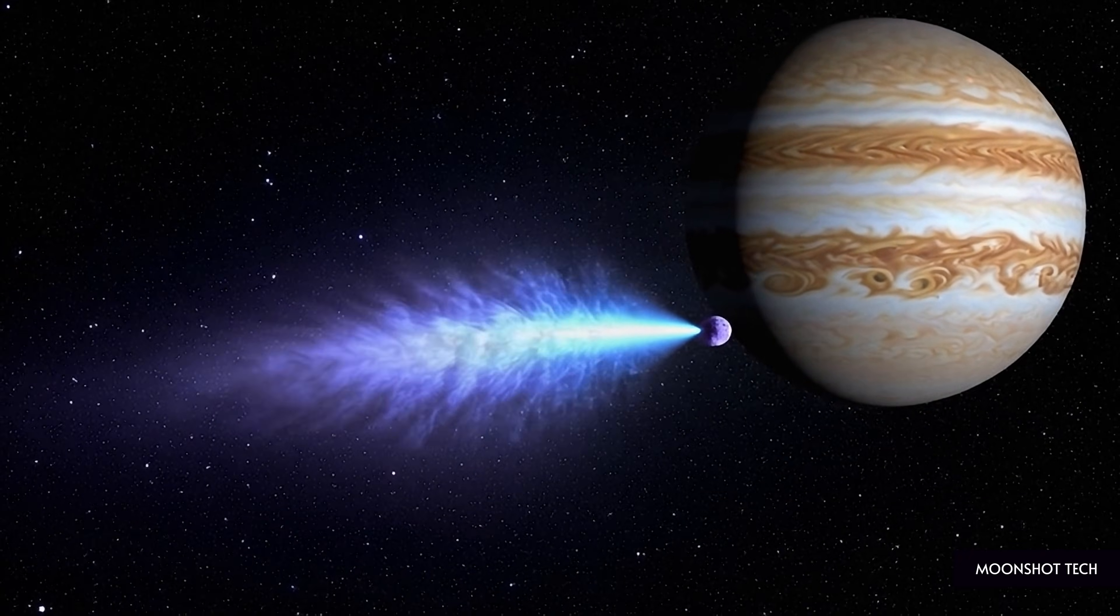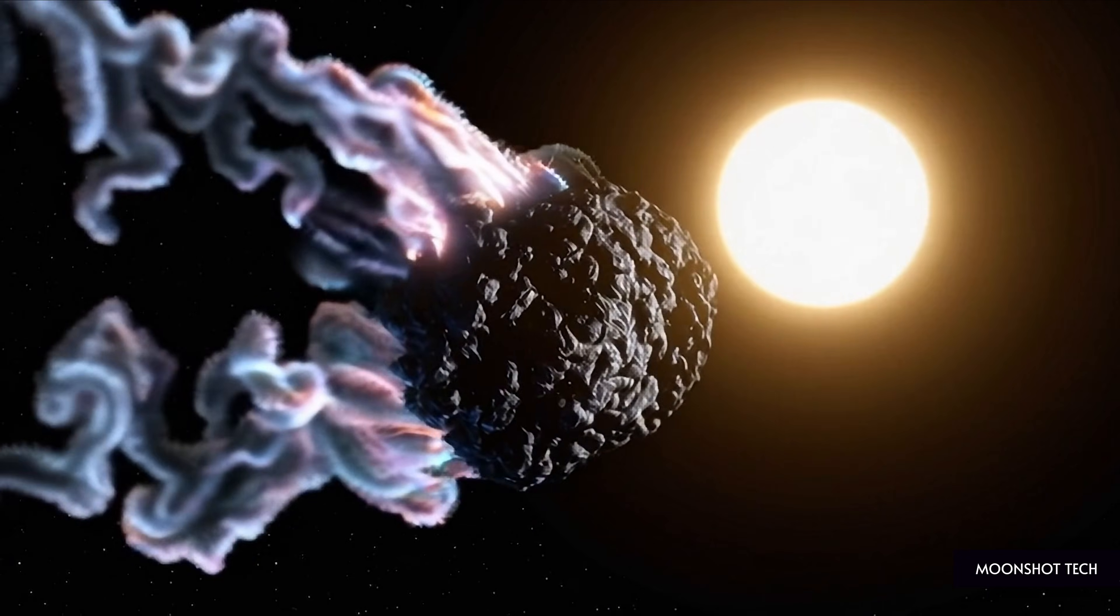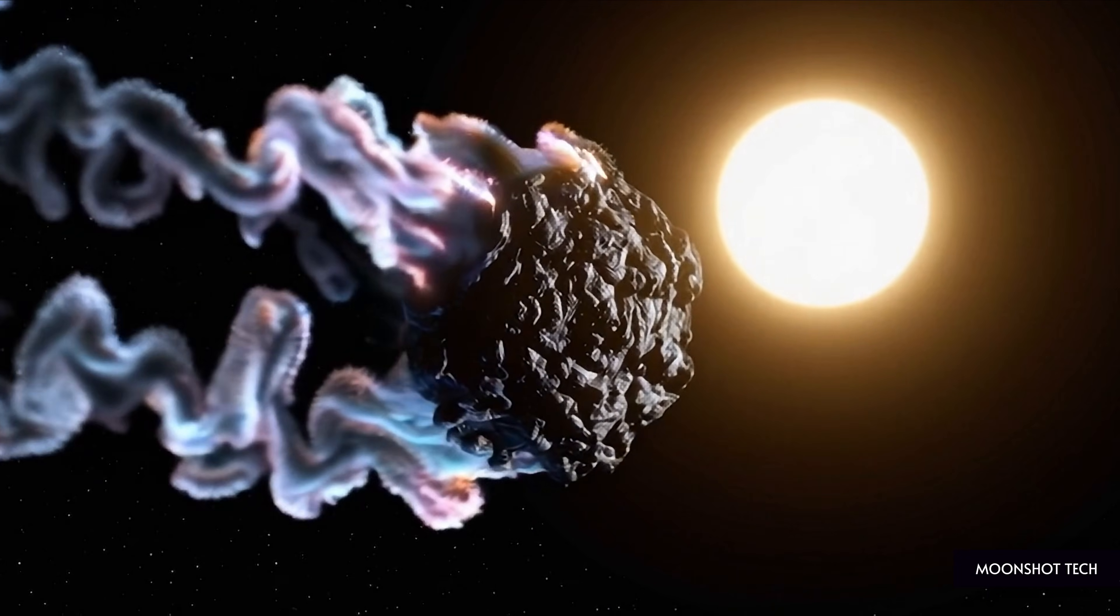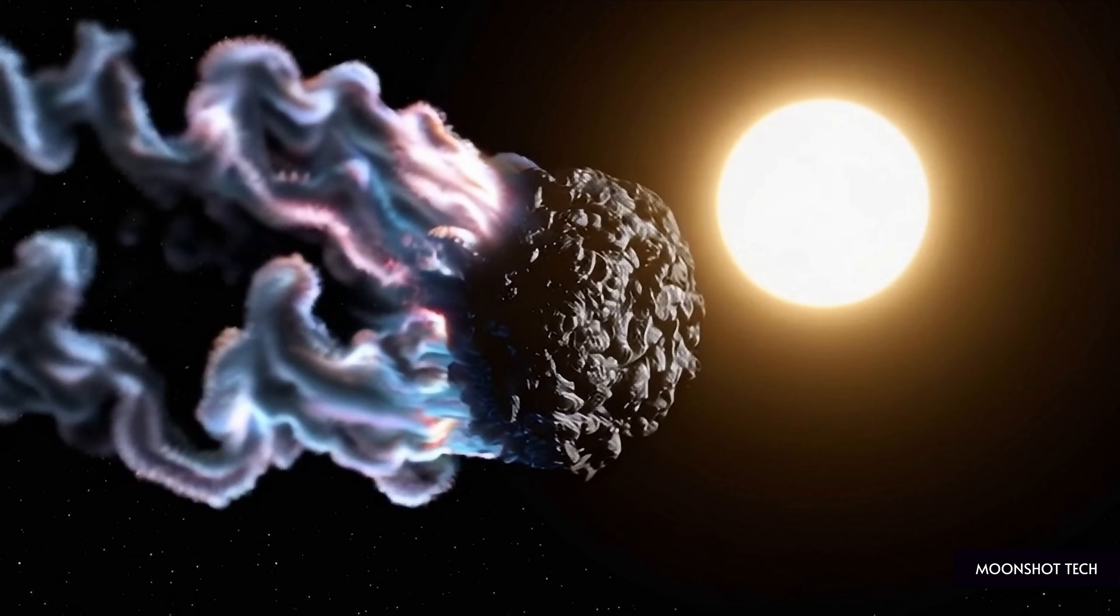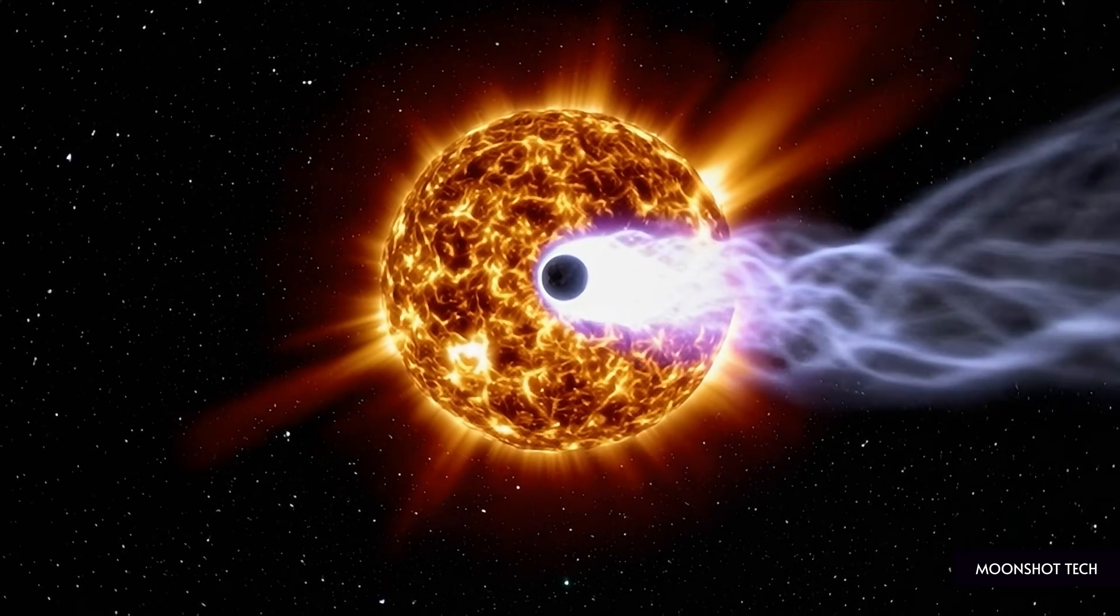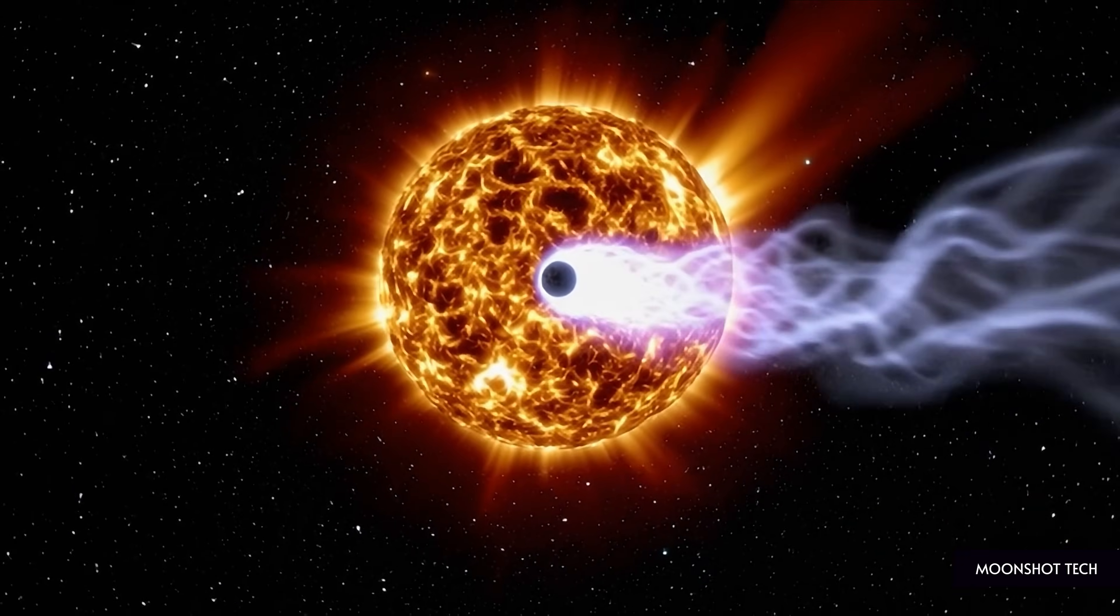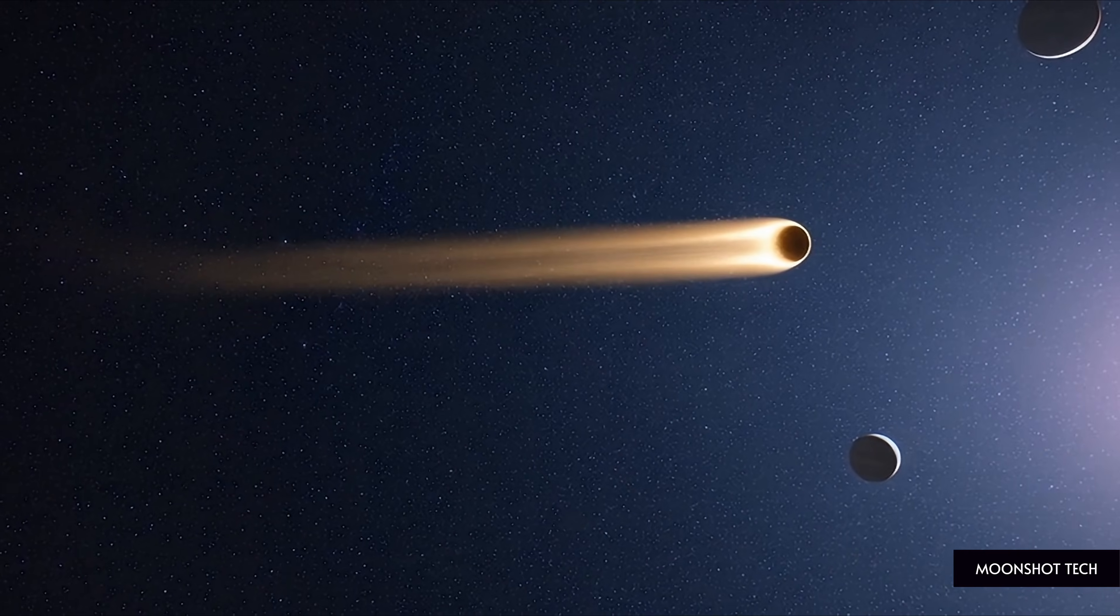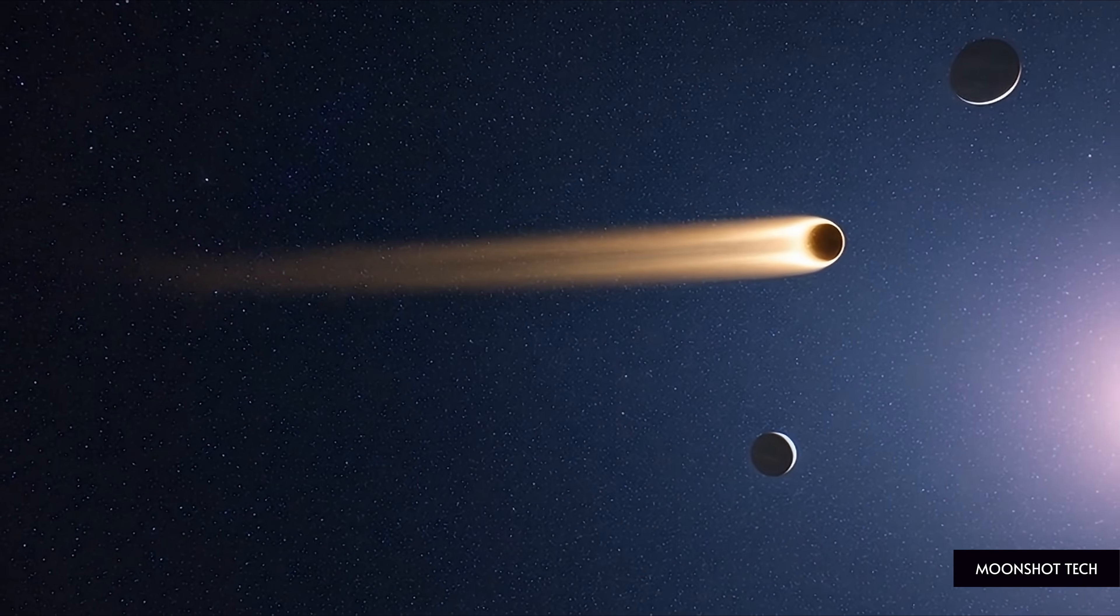Here is what normal comets do. As they approach the Sun, ice sublimates, creating a glowing coma and a tail pushed away by solar wind. As they move farther from the Sun, they cool, activity decreases, the tail weakens, basic thermodynamics.